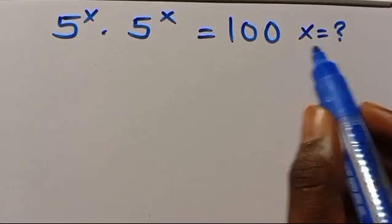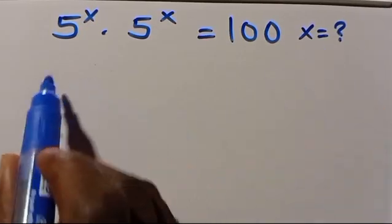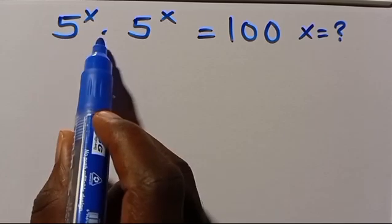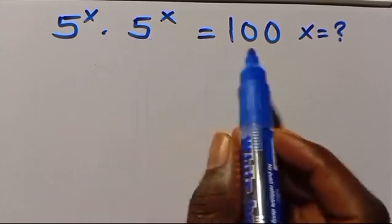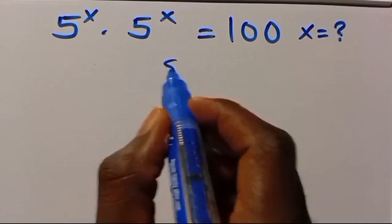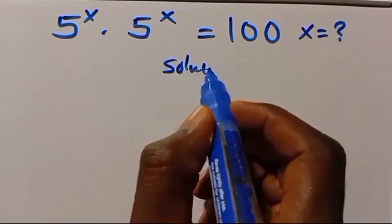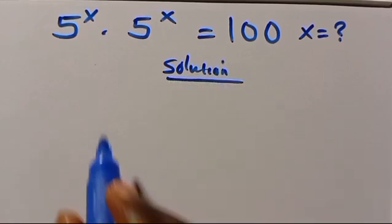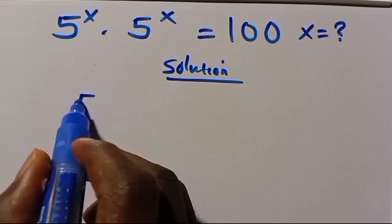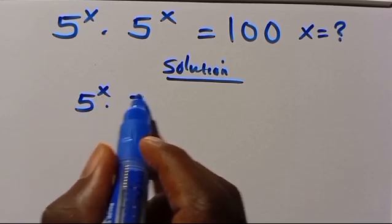What is the value of x given that 5 to the power of x multiplied by 5 to the power of x equals 100? Let's work through the solution. We have 5 to the power of x times 5 to the power of x equals 100.